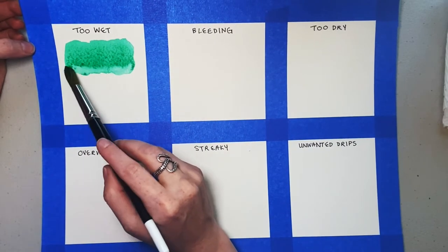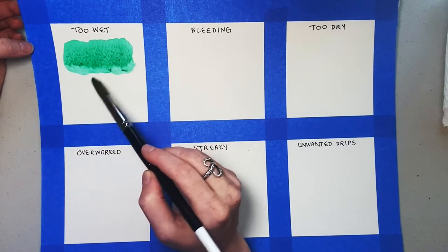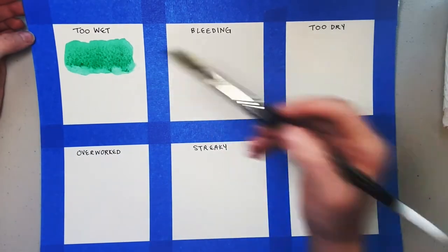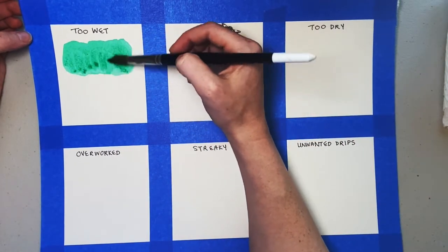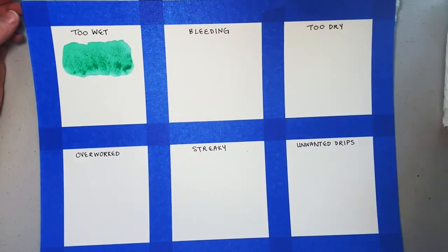Doing this can sometimes lead to the wash looking uneven at the end. So while the paper is still wet, go back in and lightly brush over the full surface to balance it all out.